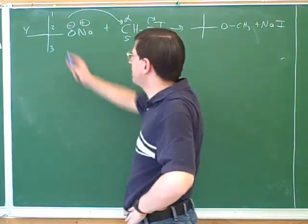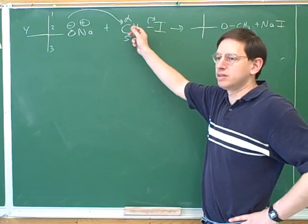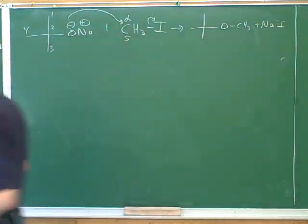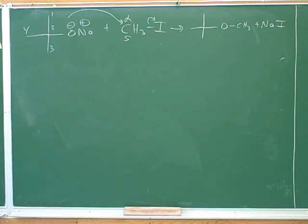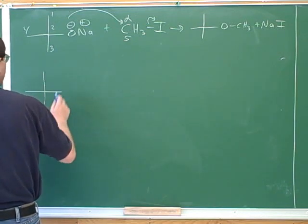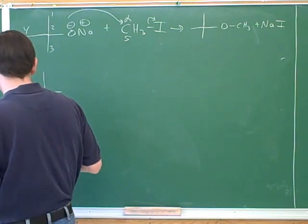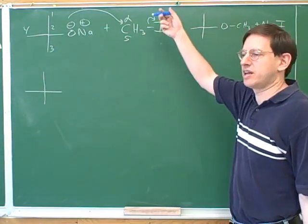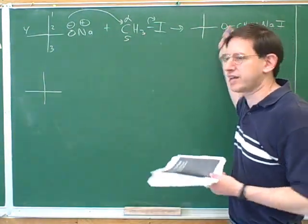Even though we had a bulky base here, we still didn't get E2 because we had a methyl substrate, and that can't do an elimination reaction. This was yet another example of our Williamson ether synthesis. This is an alkoxide that's attacking a halo-alkane to form an ether.